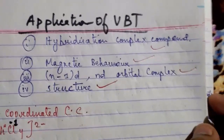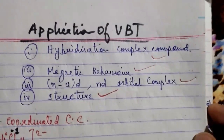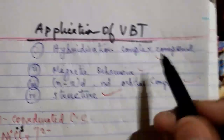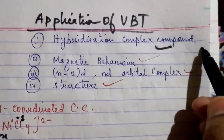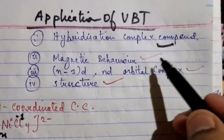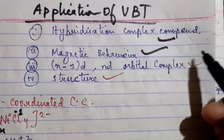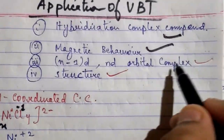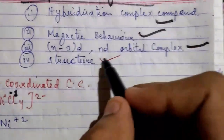Hello friends! Today we are going to take the application of valence bond theory. We are going to cover hybridization of complex compounds, magnetic behavior of complex compounds, interaction with anti-bonding orbitals of complex compounds, and their structures.